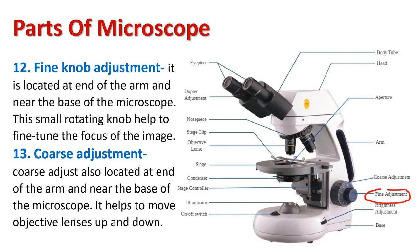The fine adjustment knob is located at the end of the arm and near the base of the microscope. This small rotating knob helps to fine tune the focus of the image. The coarse adjustment knob is also located at the end of the arm near the base. It helps to move the objective lens up and down, and is typically used in conjunction with the fine adjustment knob.